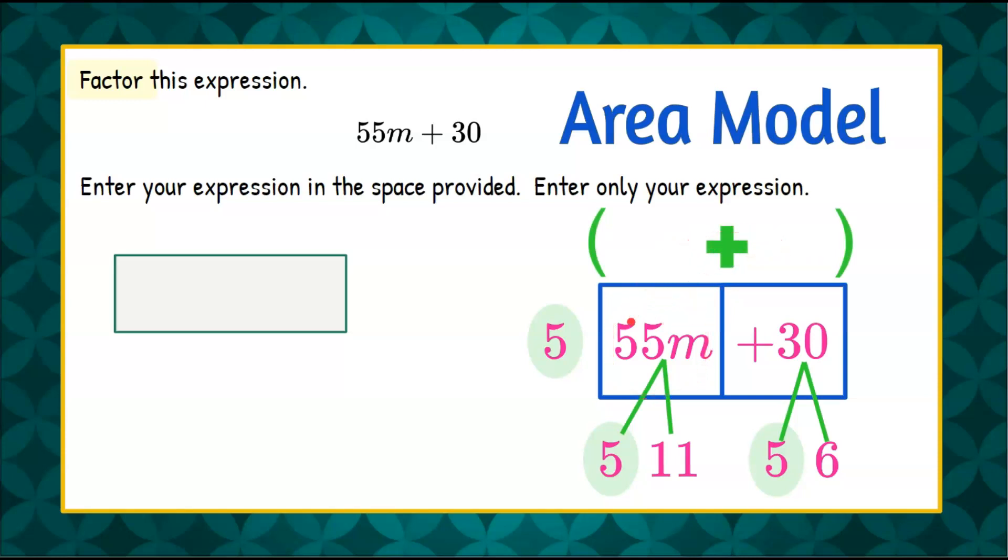So we have this square which isn't a perfect square, we're just using it as a model. So we want to know 5 times what will have this quote-unquote area of 55m. Well we can use our factors from below because we know that 5 times 11 is 55.